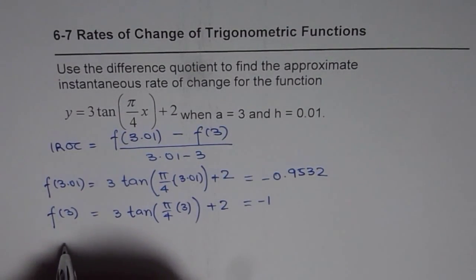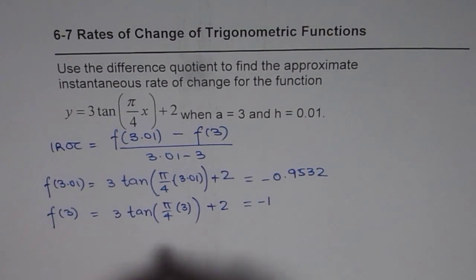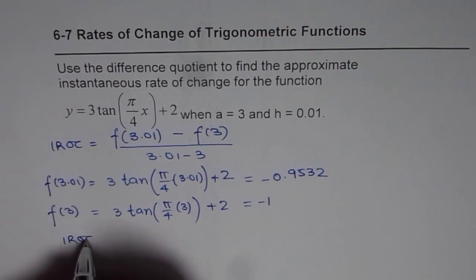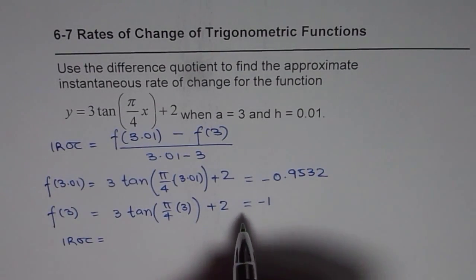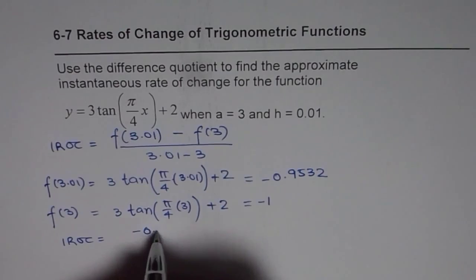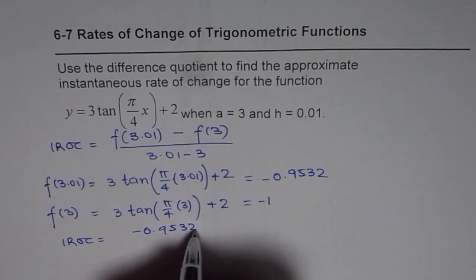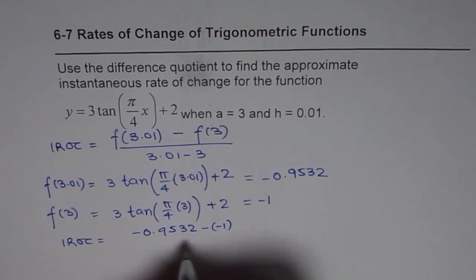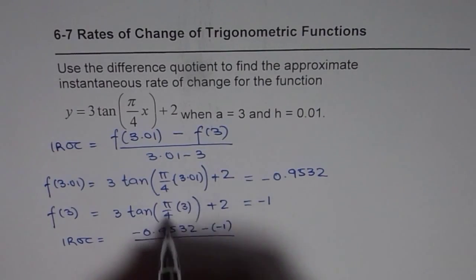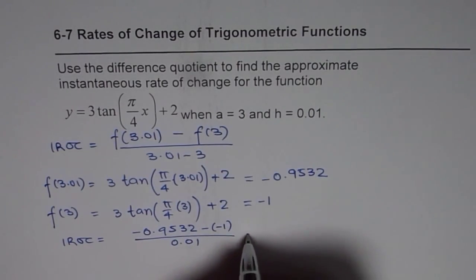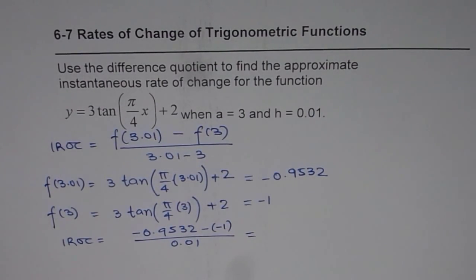So we can substitute these values, and using the difference quotient method, we can find instantaneous rate of change as minus 0.9532 minus of minus 1 divided by 0.01. So let's use calculator once again.